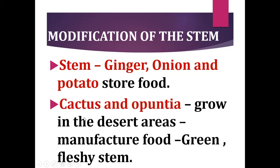Some plants like cactus and opuntia grow in the desert areas. They can manufacture their food in the green, fleshy stem. Usually plants prepare their food in the leaves, but these desert plants prepare their food in the green, fleshy stem.